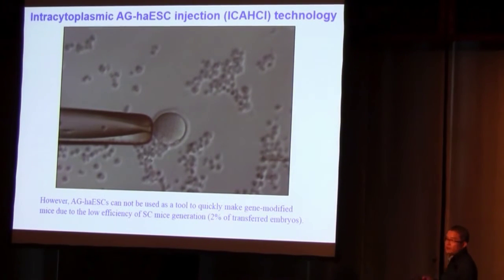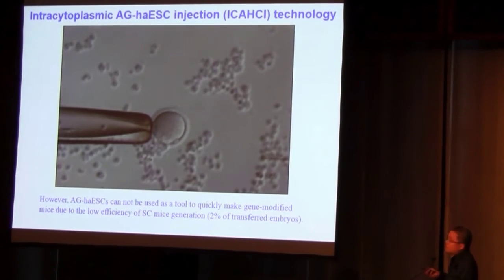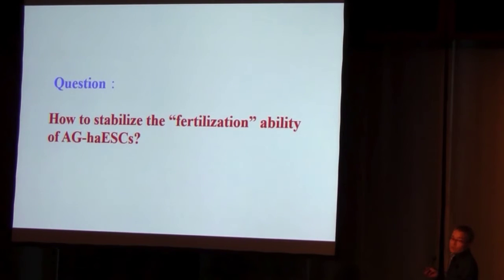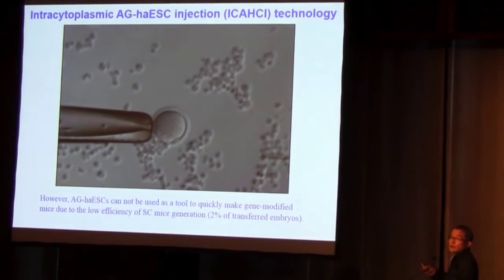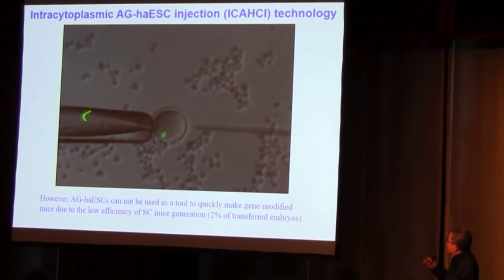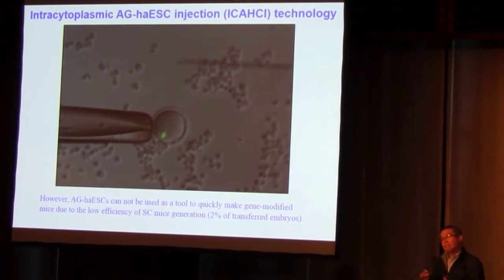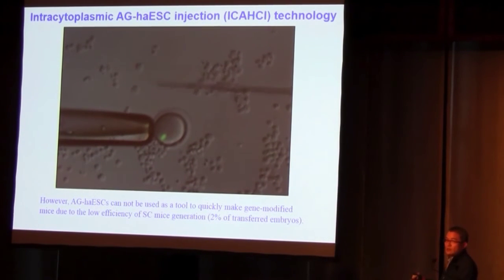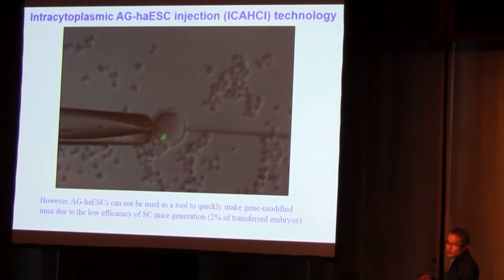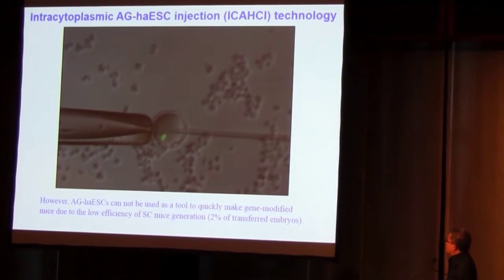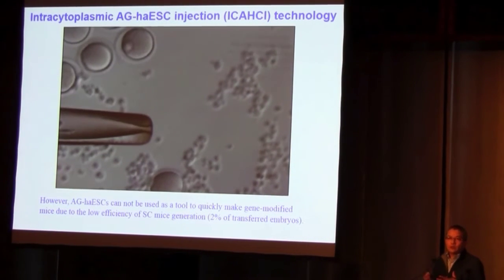Excuse me — can you help me play this movie? It's a beautiful mature oocyte. It's just like ICSI technology — we just pick up a haploid cell in place of sperm and inject this haploid cell into this mature oocyte. It's actually very easy to produce a semi-cloned embryo. So this technology is not so difficult.